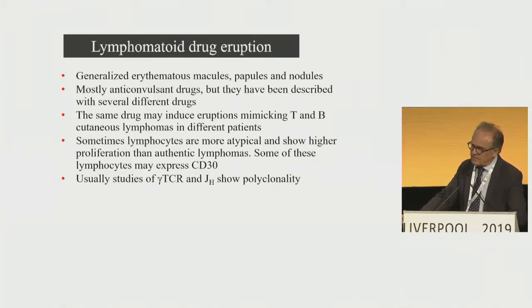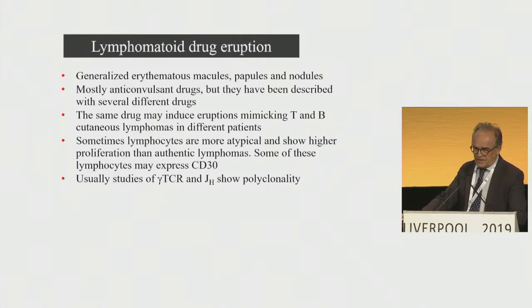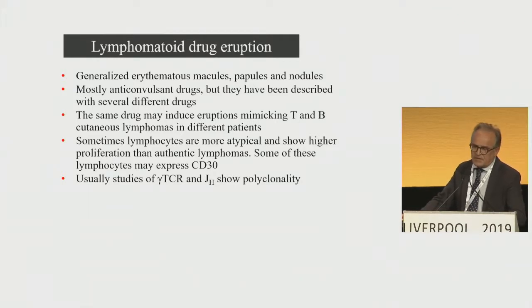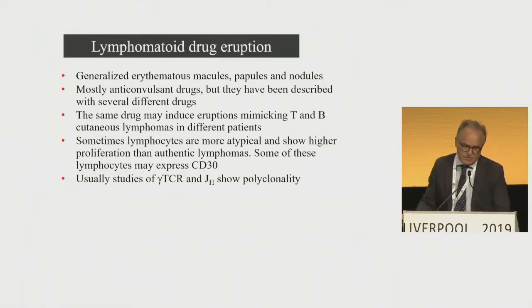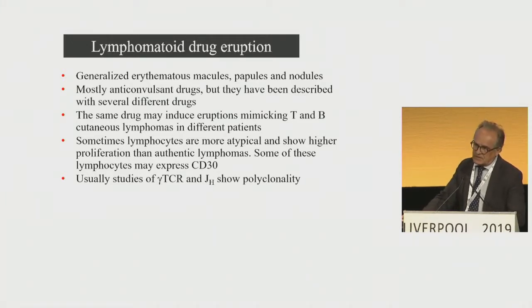Most of the time, clinically you suspect a drug reaction because it presents as a generalized erythematous rash. It has been described mostly with anticonvulsant and anti-epileptic drugs, but if you review the literature, many kinds of drugs are implicated — antihistamines, antibiotics — so it's not specific to any drug. The same drug in some cases induces a T-cell pseudolymphoma, and in others a B-cell pseudolymphoma. Clinical-pathological correlation is essential because when you see atypical lymphocytes expressing CD30 positivity, you might think this is lymphomatoid papulosis or lymphoma. In all these cases, molecular studies are polyclonal, which can be helpful.